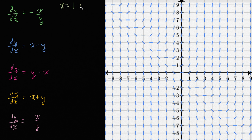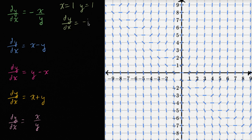So when x equals one and y equals one, for this first differential equation, dy/dx would be negative one over one, or negative one. Now is that depicted here? When x is equal to one and y is equal to one, our slope isn't negative one — our slope here looks positive. So we can rule this one out.